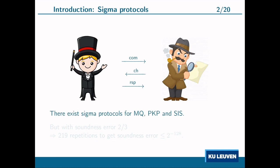There exist sigma protocols for the three problems we are interested in: Sakamoto et al.'s protocol for MQ, Shamir's protocol for PKP, and Stern's protocol for SIS. However, a common problem with these three protocols is that they have a soundness error of two-thirds, meaning that even if the prover does not know a solution, he can still convince the verifier with probability two out of three.